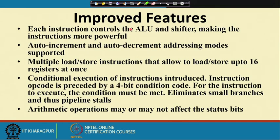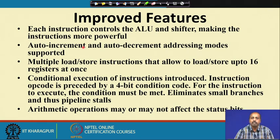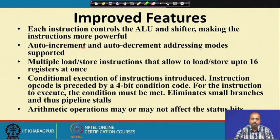Next we look at improved features for ARM beyond the basic RISC features. Each instruction controls the ALU and shifter, making instructions more powerful. Every instruction can use the ALU and shifter modules, making instructions a bit more complex — a diversion from pure RISC architecture where instructions are supposed to be simple. This means the ARM processor is a mix of RISC and CISC architectural features.